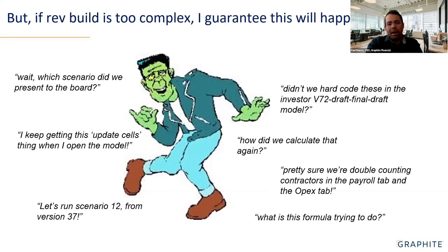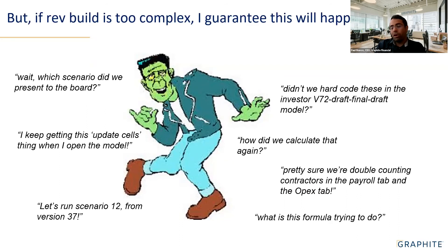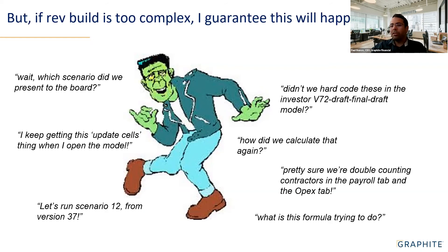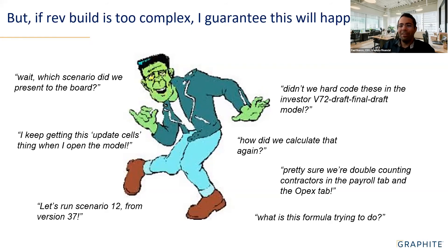Don't make it too complicated with too many versions. For us, I have my board version and my working version — that's literally it. Each time I re-forecast, I save that in a separate folder clearly labeled. But my working version is the one I play with. What I often see is tons of versions — which one did we present to the board? I've seen version numbers going into the seventies. Definitely don't do that.